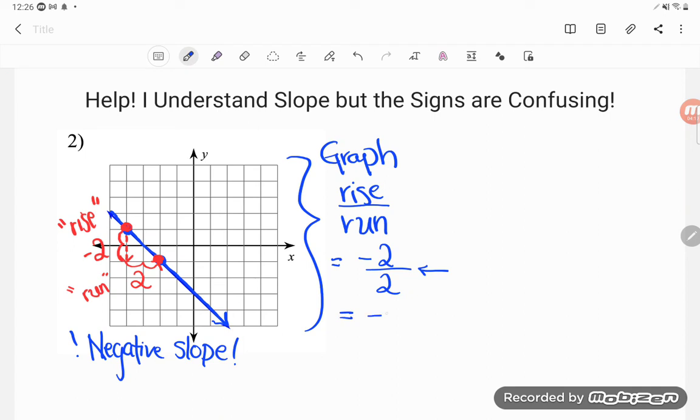Do remember if you struggle with negative numbers, you get your calculator whenever you're doing slope on the GED. You could literally type in negative two divided by two or the fraction negative two over two. Your calculator is smart enough to know they mean the same thing and you would get an answer of negative one.